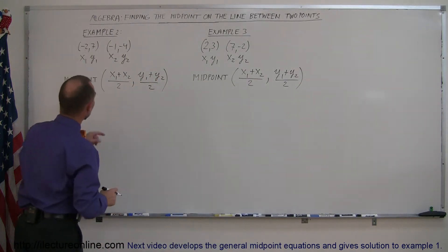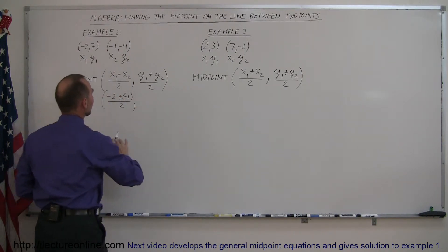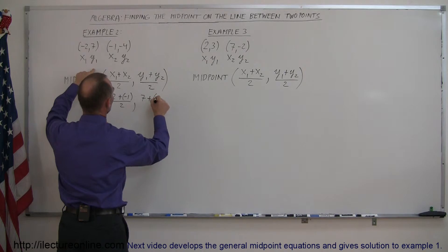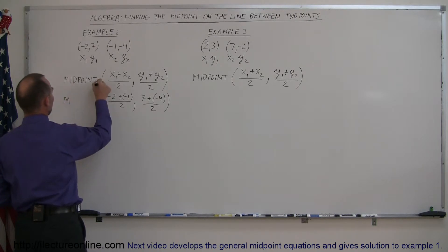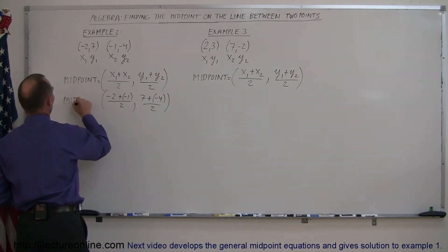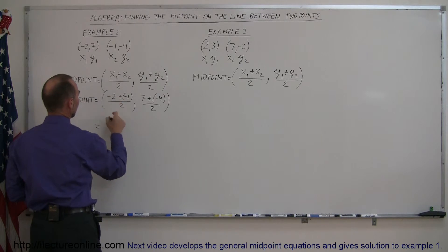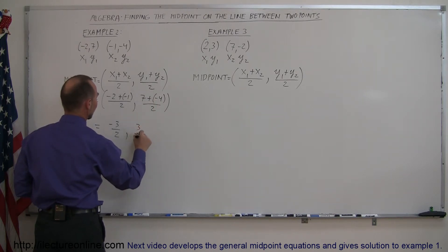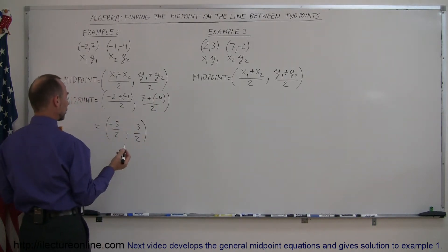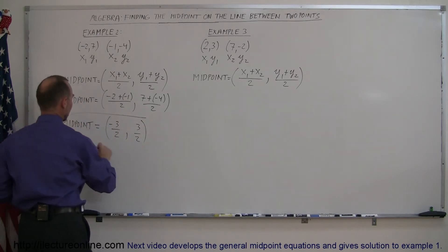To illustrate how you do that, simply plug in your x1 and x2. Here's your x1, there's your x2, so you have minus 2 plus minus 1, and divide that by 2 — that's the x coordinate. And y1, which is 7, plus y2, which is minus 4, dividing that by 2. So the midpoint is equal to: minus 2 plus minus 1 is minus 3 divided by 2, and 7 minus 4 is 3 divided by 2. We can't simplify further, so the midpoint is (−3/2, 3/2).